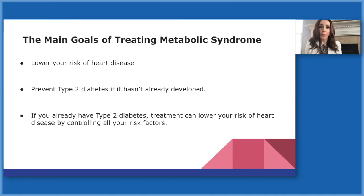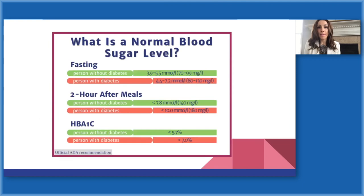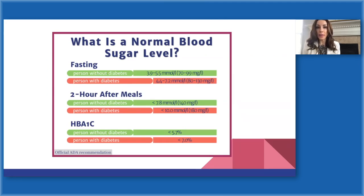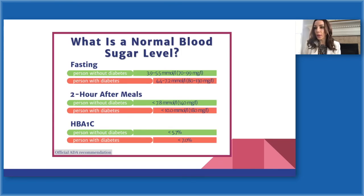When treating metabolic syndrome, the biggest goal is to lower the risk of heart disease and prevent type 2 diabetes — and if you do have type 2 diabetes, being aggressive with treatment. The American Diabetes Association defines normal blood sugar levels differently for people with and without diabetes, and those numbers may become more aggressive in the future.